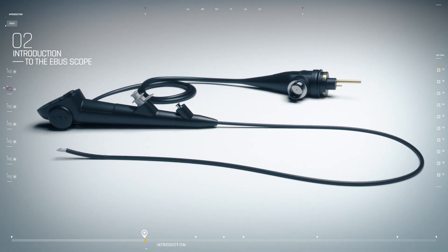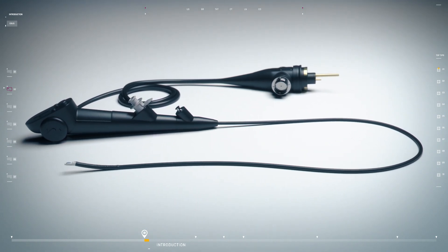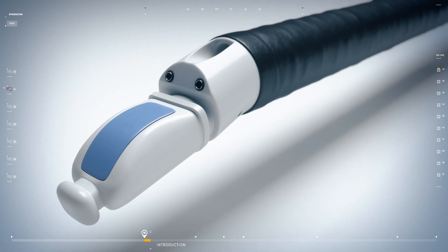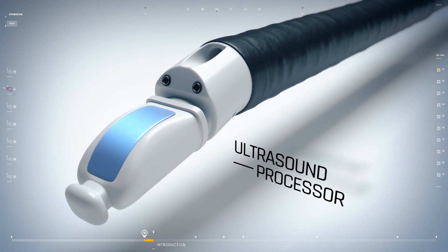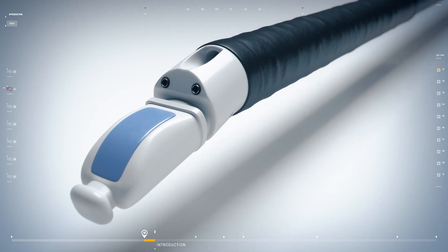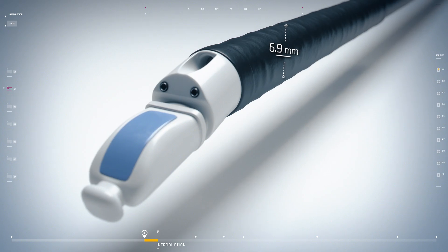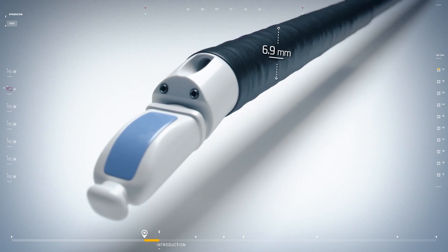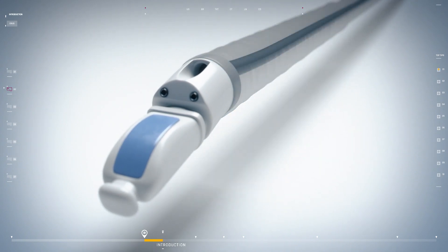There are three manufacturers of EBUS bronchoscopes. Although there are subtle differences, they all have the same fundamental components. The flexible bronchoscope has an ultrasound processor integrated into the tip. Most EBUS bronchoscopes have an external diameter of 6.9 millimeters, which is larger than a standard flexible bronchoscope, so oral rather than nasal intubation is necessary.